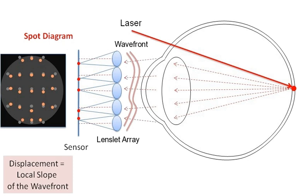The local tilt of the wavefront across each lens then maps to the position of the focal spot on the sensor.